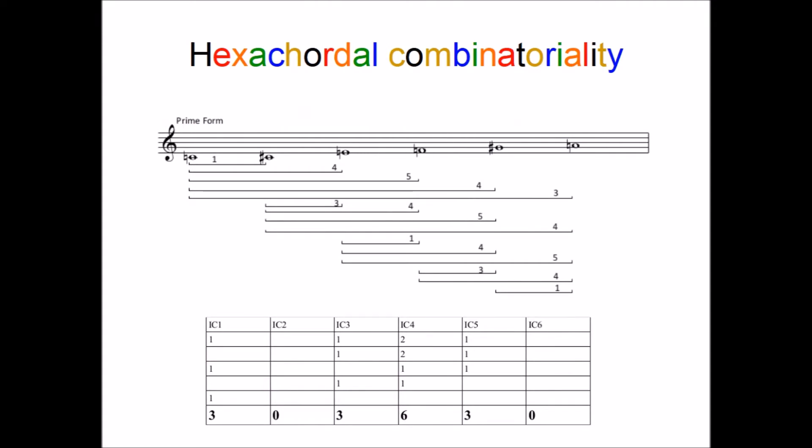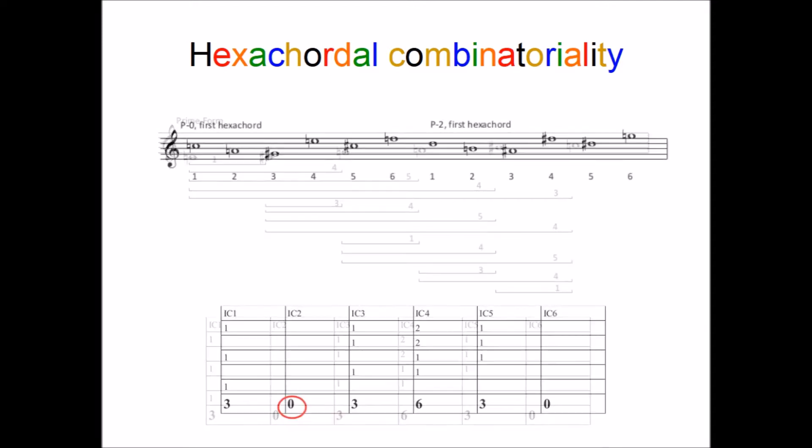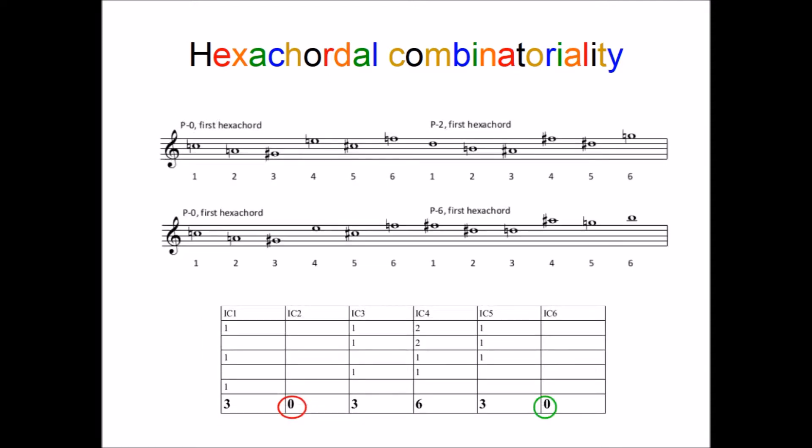To find the prime prime combinatoriality, examine the first hexachord's interval vector. If there are any zeros in the interval vector, then transposing the second prime hexachord by the resultant interval or intervals will create a prime prime combinatoriality aggregate. Thus, P0 and PX will be T-related. With this hexachord, there are two answers, P2 and P6.